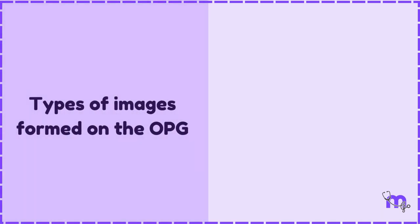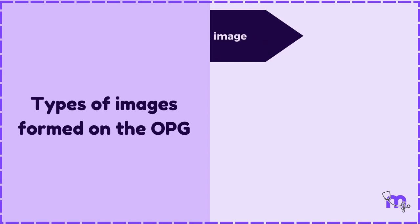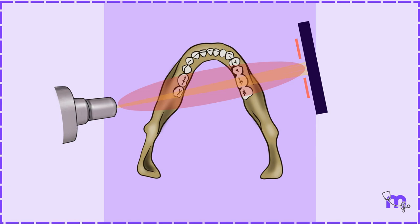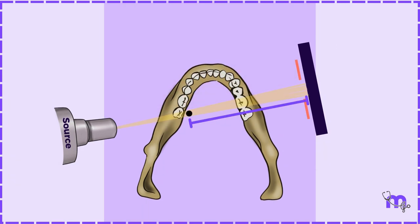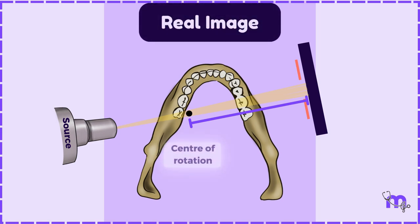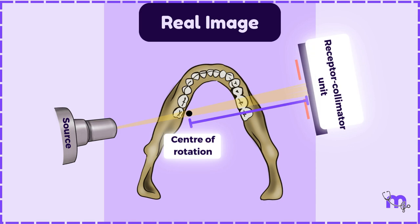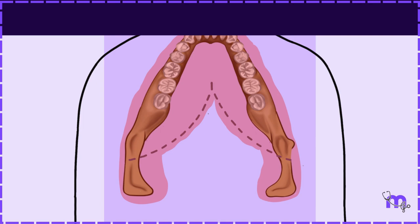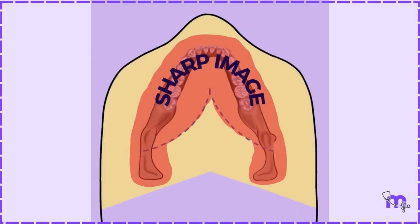Let us now discuss the types of images formed on the OPG, which are of three types: real image, double image, and ghost image. Formation of these images depends on the position of the structures within the rotational parts of the X-ray source and the receptor-collimator unit. All the objects between the center of rotation and the receptor form real images — objects A, B, and C would come under this category. The focal trough also forms between the center of rotation and the receptor; therefore, all structures within the focal trough form real images on the radiograph. Objects outside the focal trough but between the center of rotation form unsharp real images.